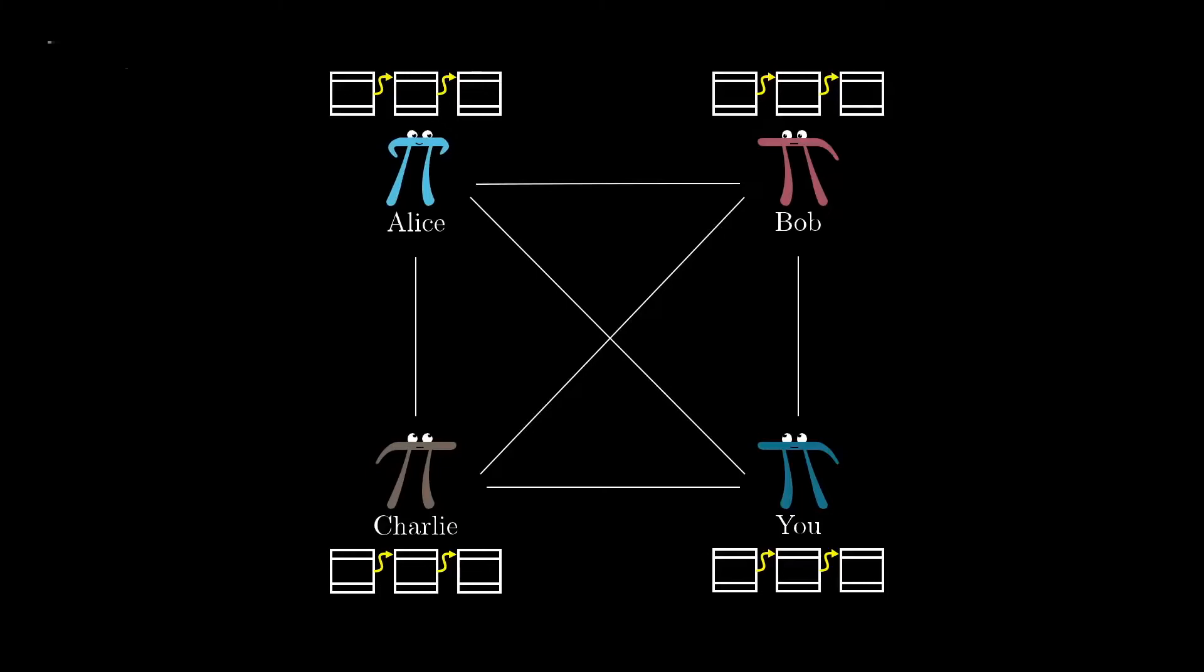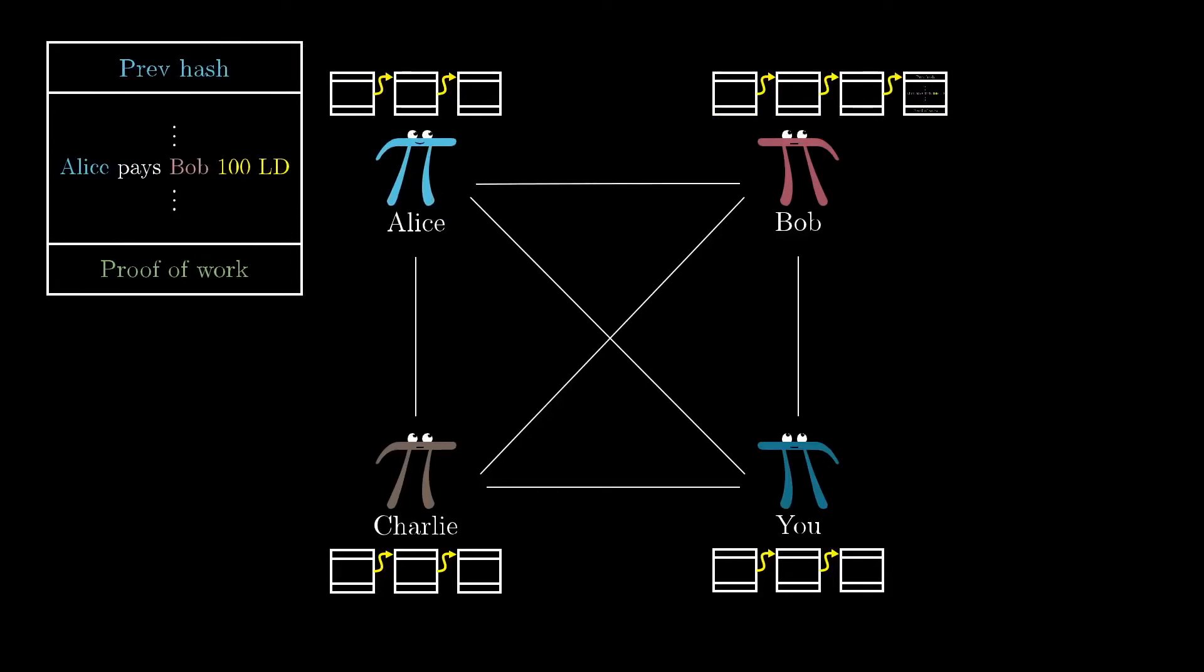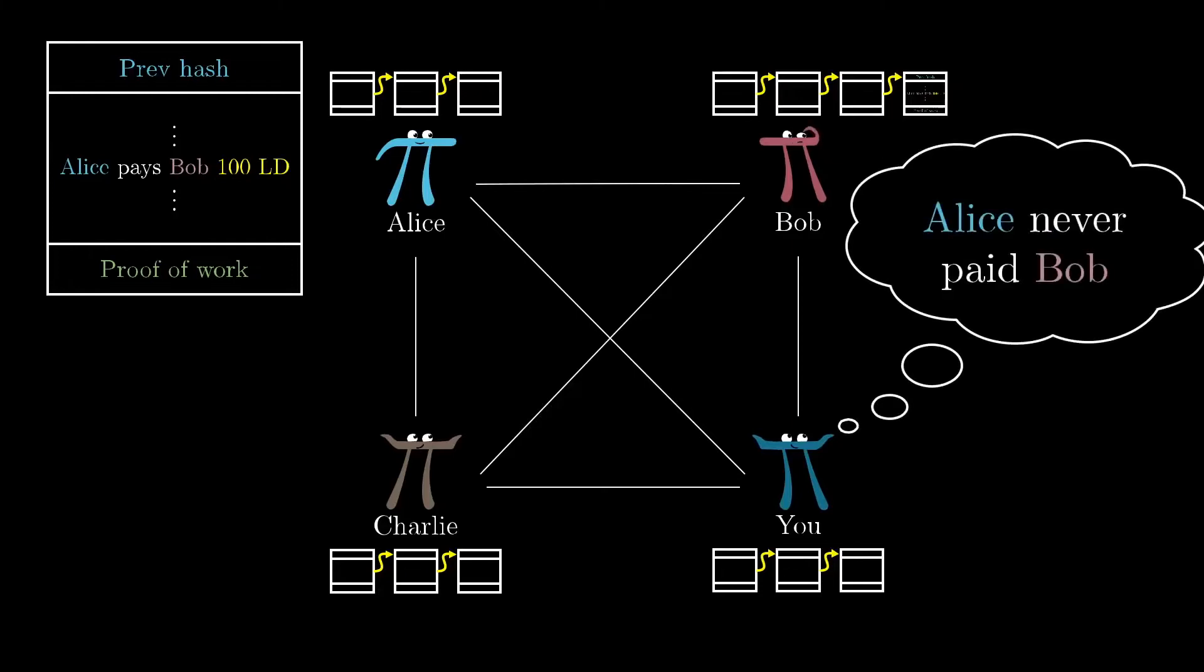Maybe Alice is trying to fool Bob with a fraudulent block—namely, she tries to send him one that includes her paying him a hundred ledger dollars, but without broadcasting that block to the rest of the network. That way everyone else still thinks that she has those hundred ledger dollars.